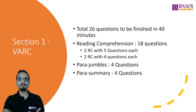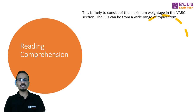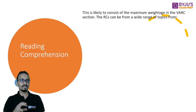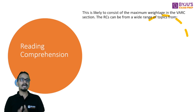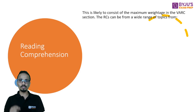Let's talk about Reading Comprehensions, Para Jumbles, and Para Summary one by one. Reading Comprehension is one of the most important topics in CAT. There are 18 questions out of 26 in this section, and 18 questions out of a total of 76 questions in CAT. Reading Comprehension comprises approximately 25 percent of CAT — one fourth of the entire exam.